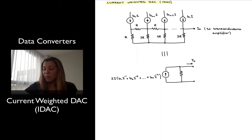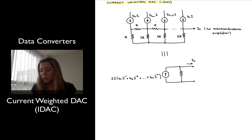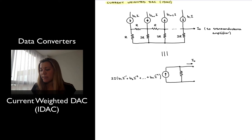The equivalent circuit, if we compute the Norton equivalent circuit for this circuit, can be represented as a current source in parallel with a resistor of value R, where the value of that input current is equal to 2 times I — I being the reference current — times B1·2^(-1) + B2·2^(-2) + ... + BN·2^(-N). Notice a similar weighting approach to what we had with the R2R ladder in the case of the voltage-based DAC.